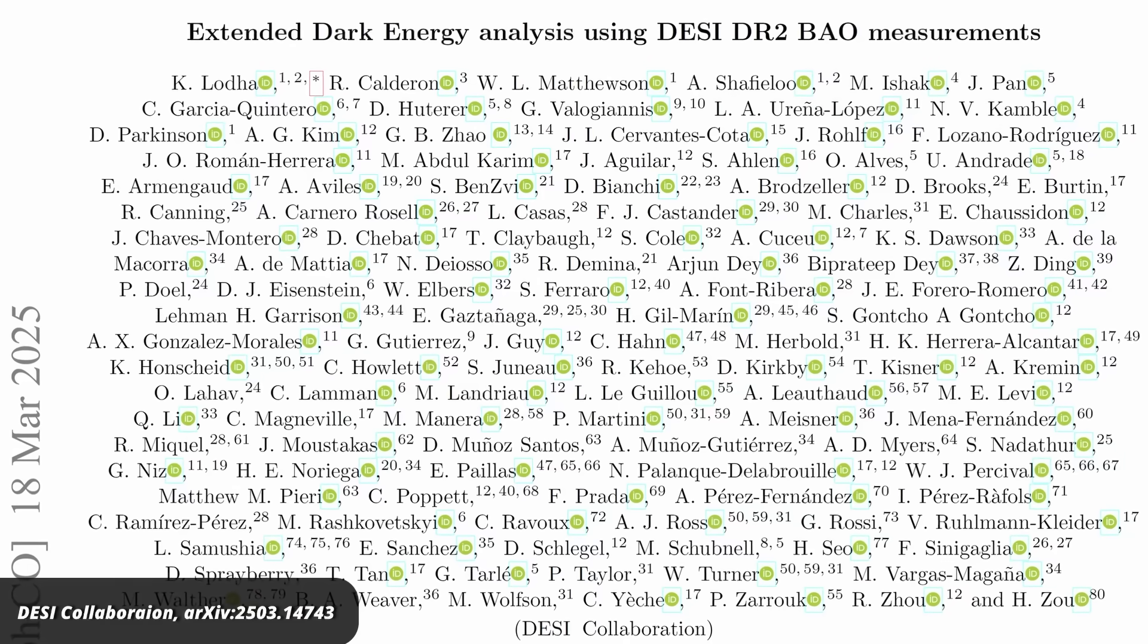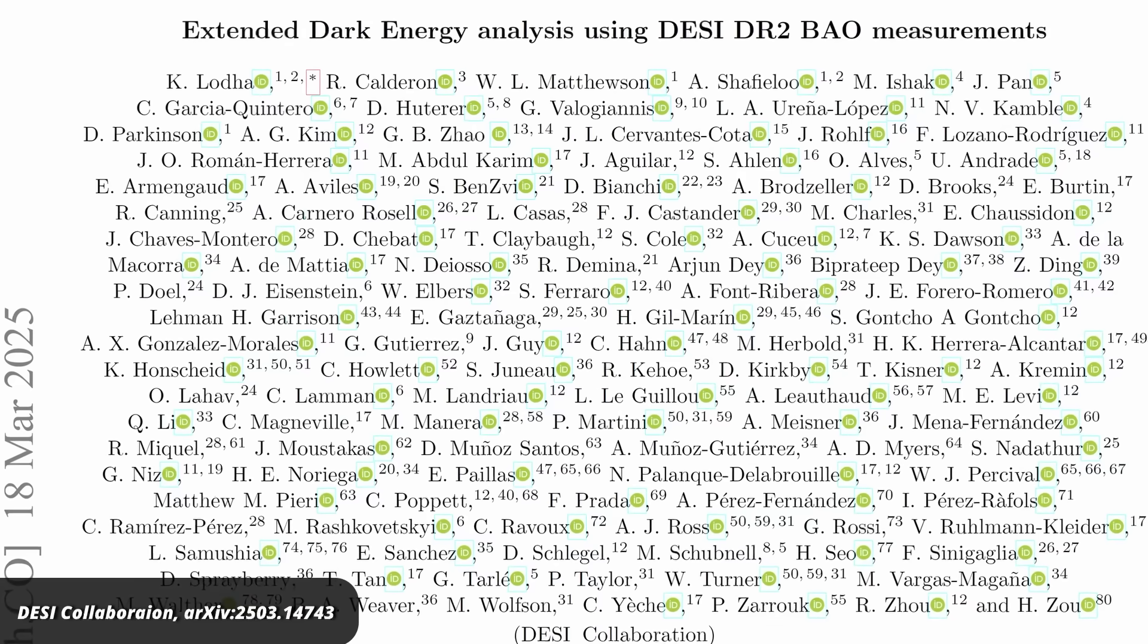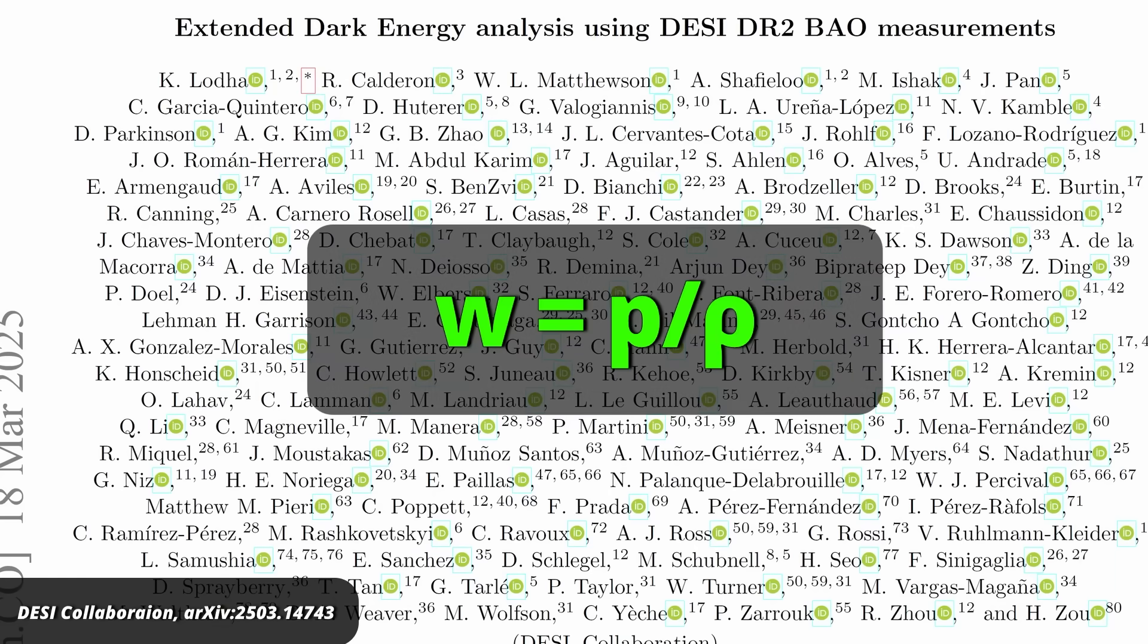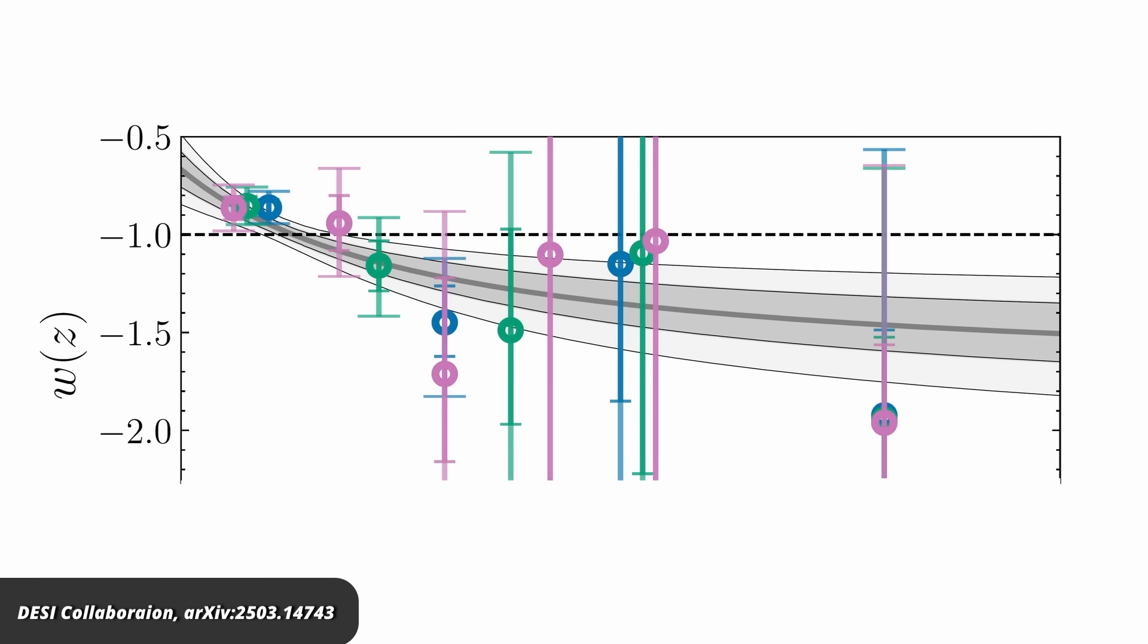In their new paper they quantify this by the ratio of the pressure over density, which is a parameter called W. For the cosmological constant this W is equal to minus 1. You can see the results of their analysis in this figure. The dashed line is the prediction for a cosmological constant. The gray line is the best fit to the data and the gray shaded regions are the 1 and 2 sigma uncertainty ranges.